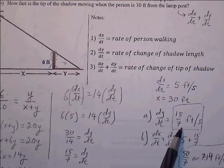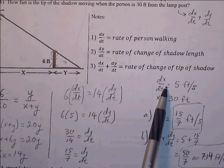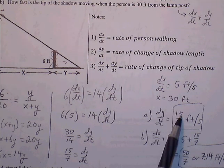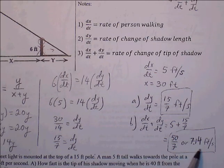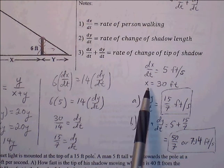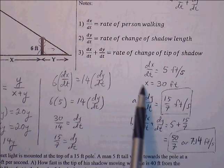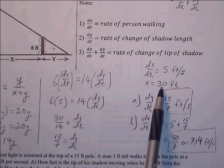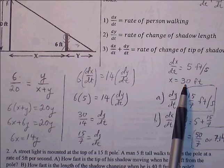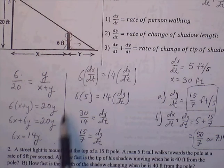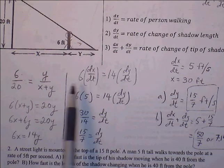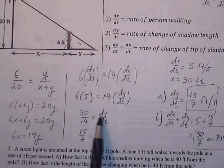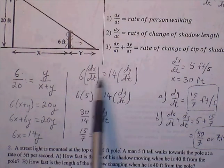Cross multiplying, we get 6(x + y) = 20y. Expanding, 6x + 6y = 20y. Combining like terms, 6x = 14y. Now I can find the derivative of each variable with respect to time. So 6x becomes 6 dx/dt, because the derivative of x is 1 and we attach dx/dt. The derivative of 14y is 14 dy/dt, because the derivative of y is 1 and we attach dy/dt.